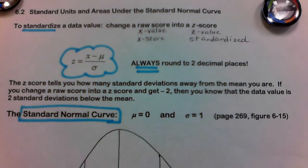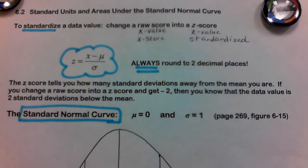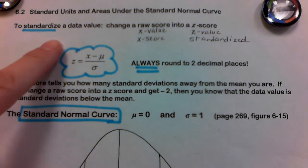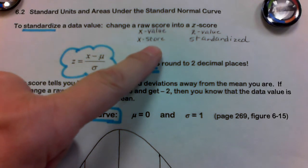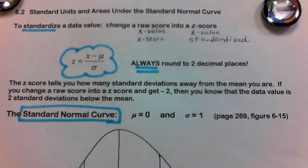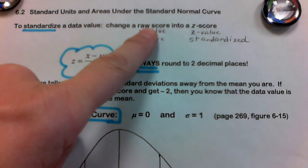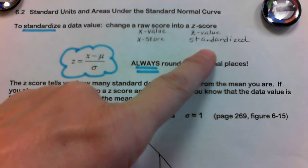That leads us into today's discussion where we standardize all of our numbers. When we standardize them, we're all working on the same playing field. We're going to look at how to change a raw score. A raw score is a real-life value, also known as an X value or X score. For example, if you're asked your weight and you said 115, that is a raw score. We convert those real-life values into a Z score, also known as a Z value, which means the value is standardized.